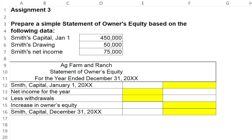In this video, we will prepare the statement of owner's equity and determine the balance at the end of the year, December 31st. Assume we're given the balance for the beginning of the year, January 1st, for Smith's capital of $450,000.